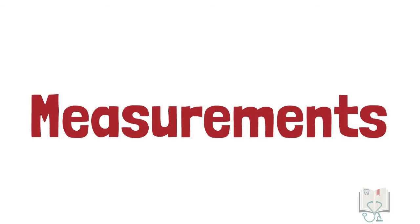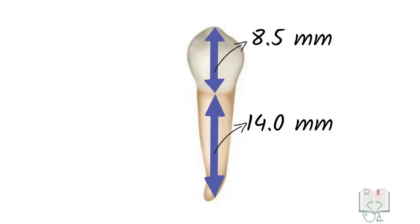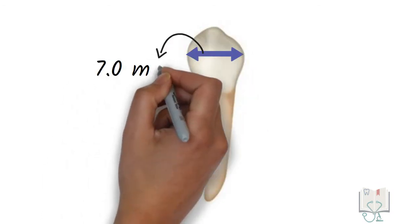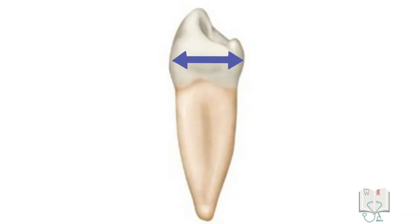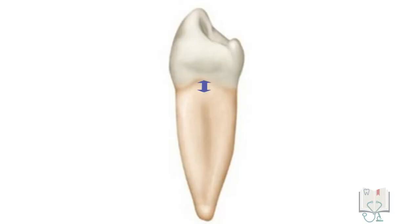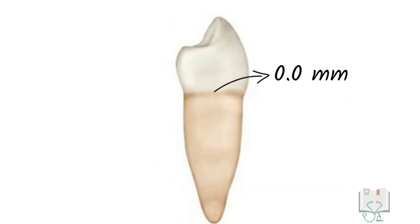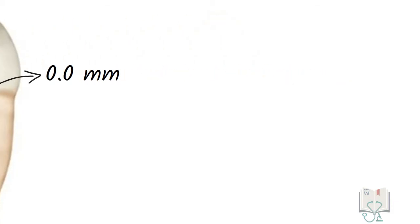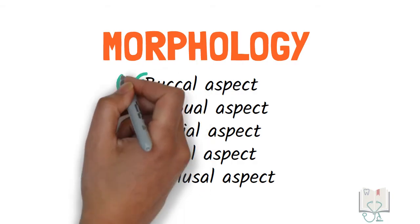The age of eruption is 10 to 12 years. The crown length is 8.5 mm and root length is 14 mm. The mesiodistal diameter of the crown is 7 mm and at the cervix is 5 mm. The buccolingual diameter of the crown is 7.5 mm and at the cervix is 6.5 mm. The curvature of the cervical line on the mesial side is 1 mm, whereas on the distal side it is flat.